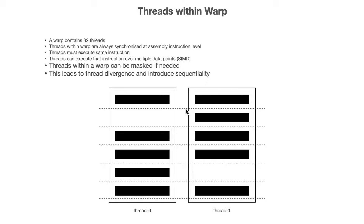Threads within a warp can be masked if needed. This leads to thread divergence and introduces sequentiality. For example, if you want only thread one to execute some instruction, you can introduce an if statement saying if thread index equals one, then do stuff. In that case, thread zero will be automatically masked out at the hardware level — it will wait until you reach a particular point. Similarly, thread one will be masked until thread zero reaches that particular barrier.